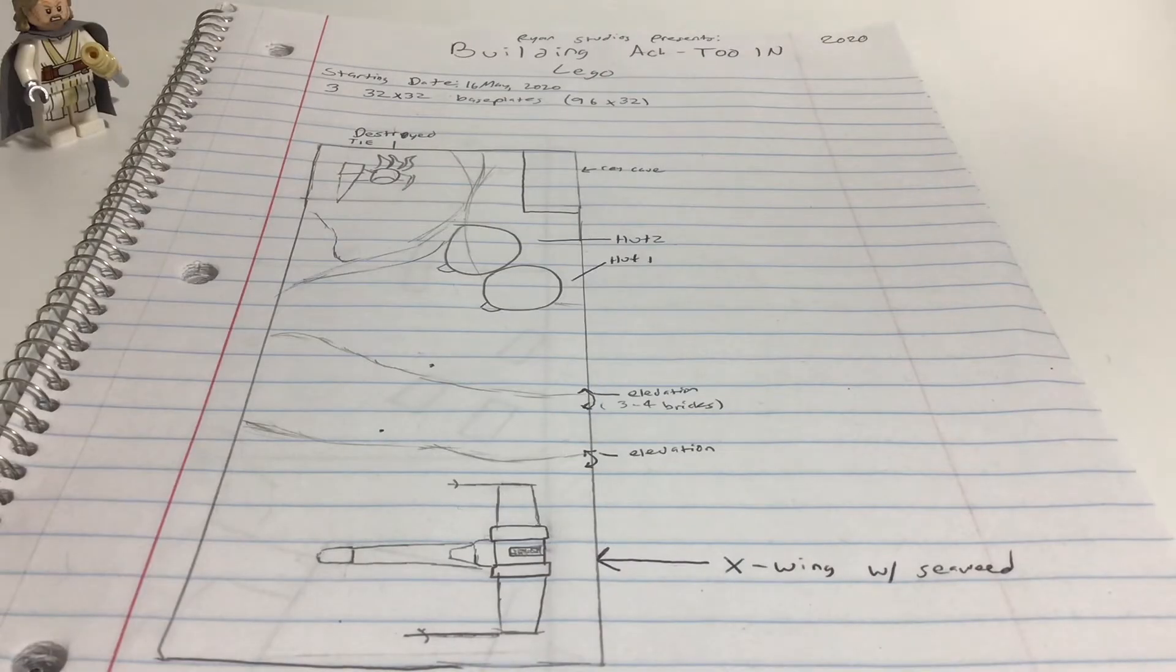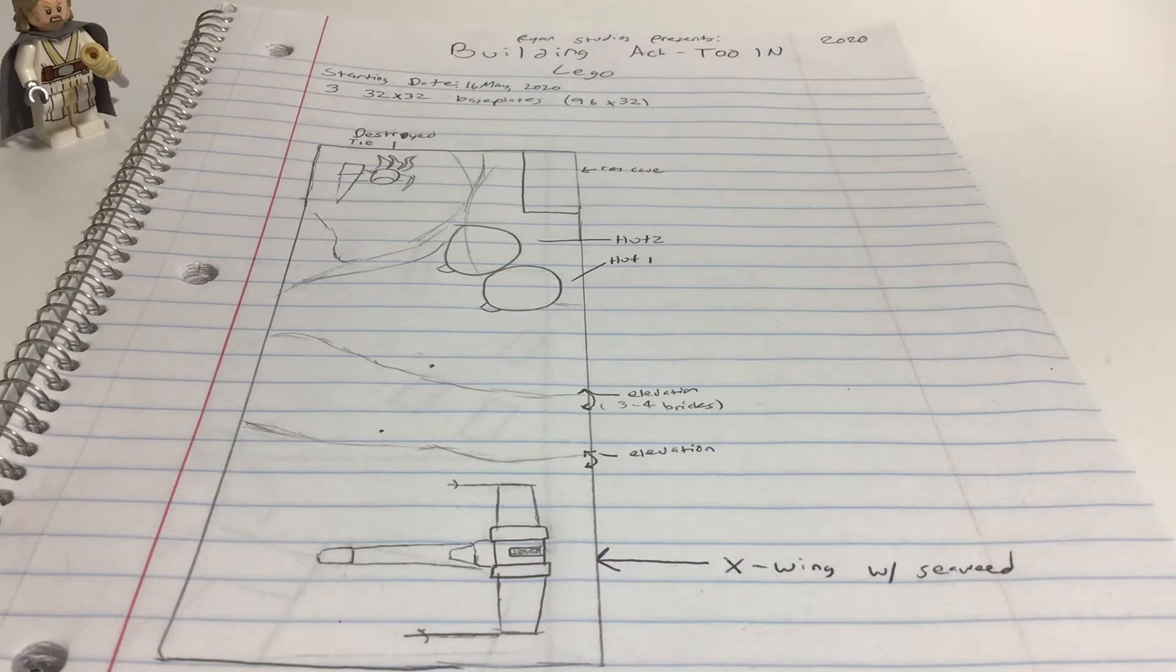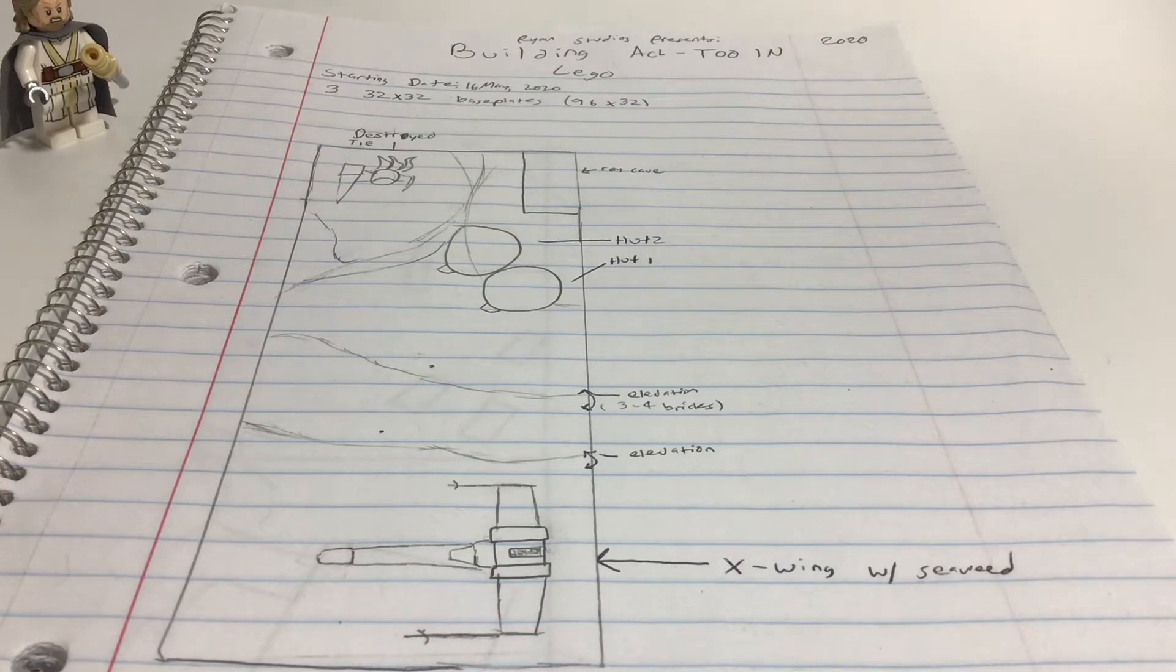Hello, it is me, RobFarazStudios, and today is episode 1 of building Ahch-To Island in LEGO. Guys, I just can't believe we're starting a new series. Now yes, the Death Star is still built.